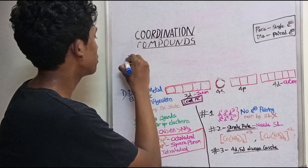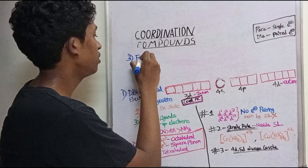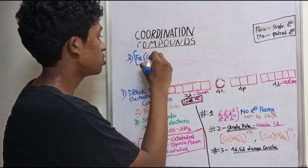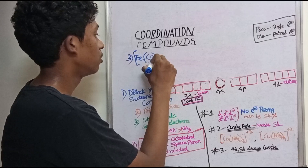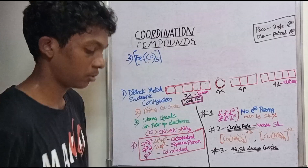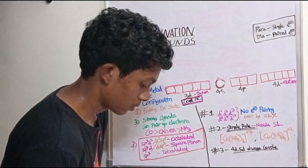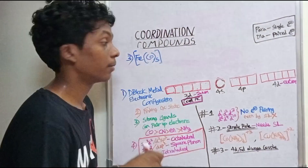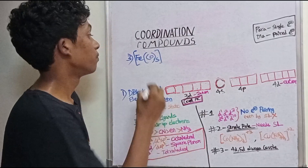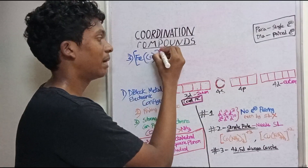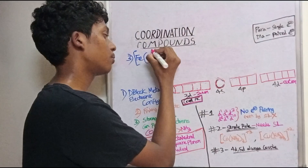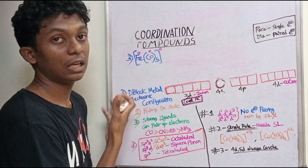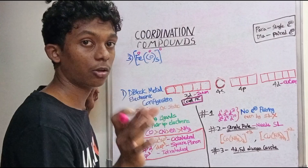The third example is [Fe(CO)₅]. It's very easy. Let's start with the oxidation state. The charge of the complex is zero — it is a neutral complex and does not carry a charge. CO is a neutral ligand, so iron has an oxidation state of zero.